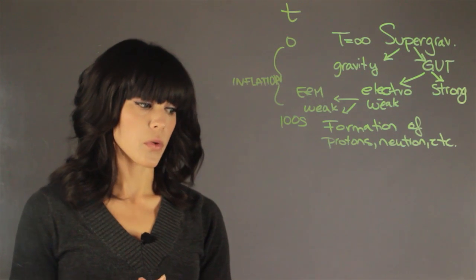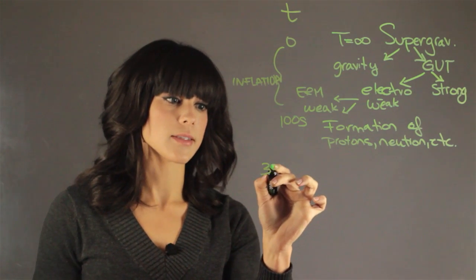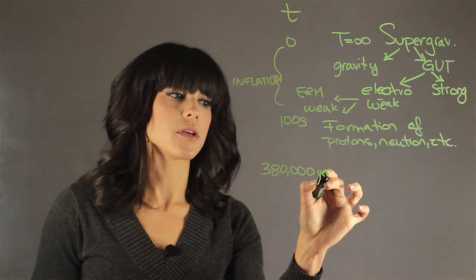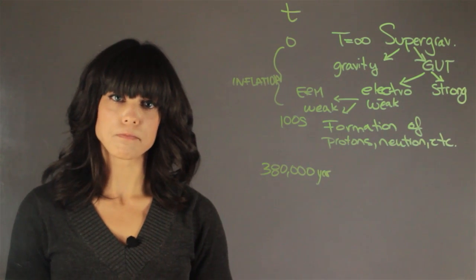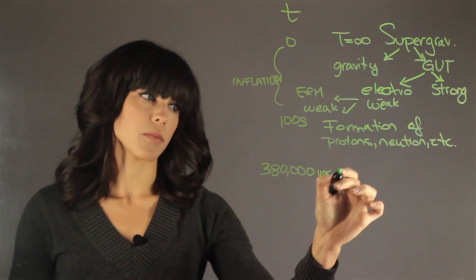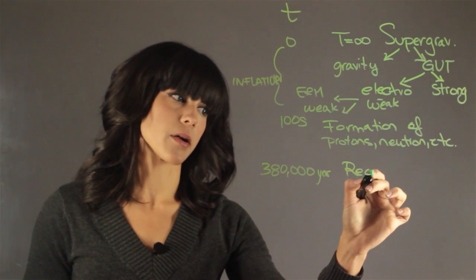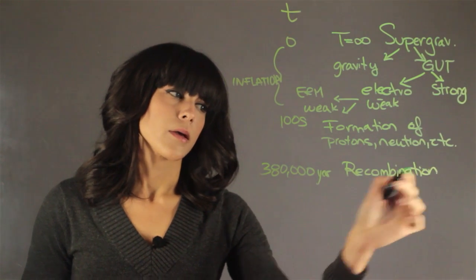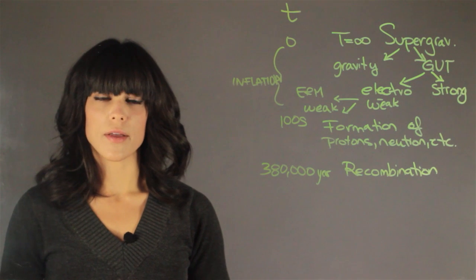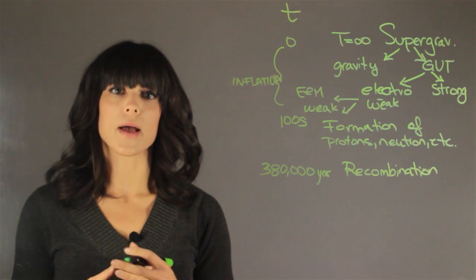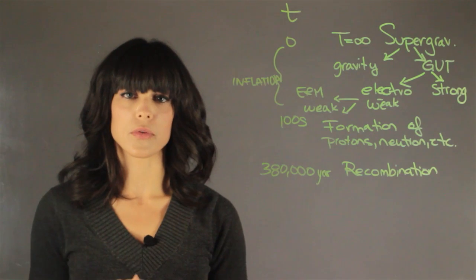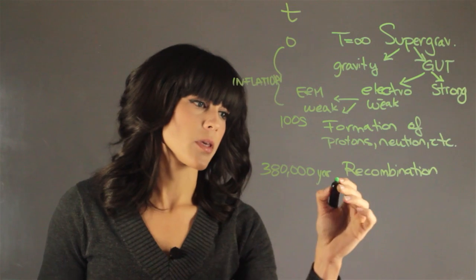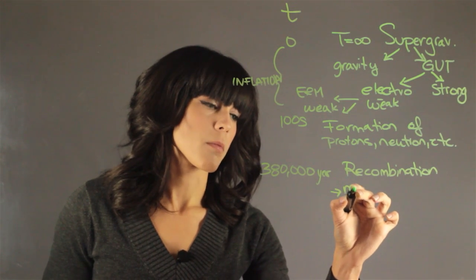And then it actually took quite some time because the next thing is 380,000 years after the Big Bang. So what's happening at this time? We have something called the recombination era. So during the recombination era, the universe had gotten cool enough to form actually baryonic matter. So the protons, neutrons, and electrons were able to bound together and form elements. So here we make atoms.